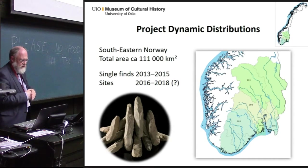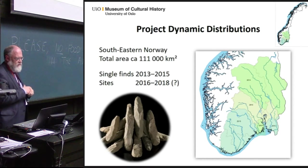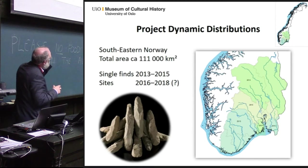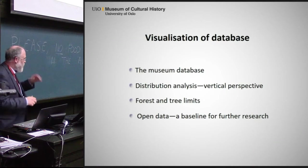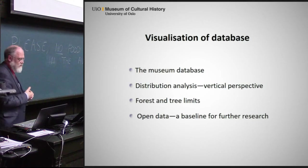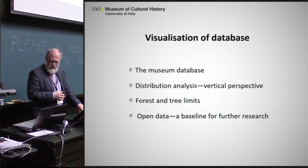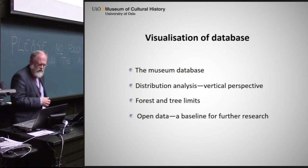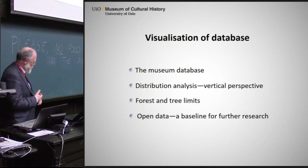We worked on single finds like axes, sickles, and daggers from the Bronze Age over the last three years, and now we have also started to look at sites with other types of material, all the way from the Stone Age. What we will talk about today is the visualization of the museum database, distribution analysis in a vertical perspective, forest and tree limits, and the open data baseline for further research.